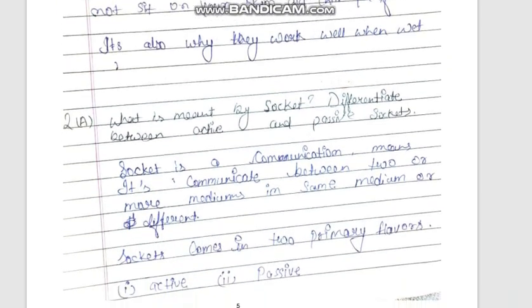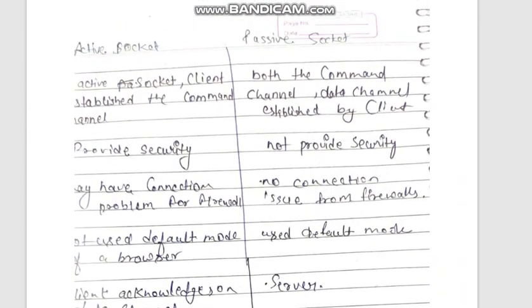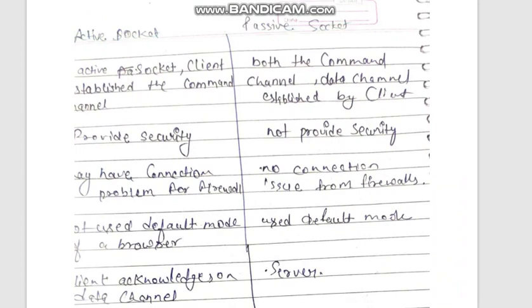The last question is: what is a socket? A socket enables communication between two or more devices in the same or different networks. It connects one computer or device to another. There are two primary types: active sockets and passive sockets. The answers are covered in this video. Take care, bye-bye, stay safe and stay healthy.